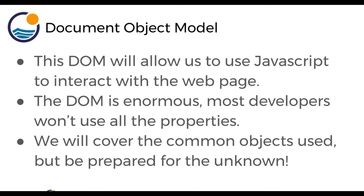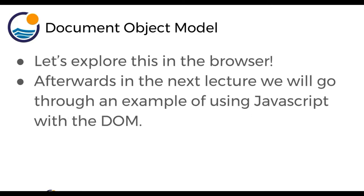This document object model will allow us to use JavaScript to actually interact with the web page and affect the HTML and CSS. Keep in mind, the document object model is enormous — it has tons of properties. But most developers won't use all the properties. We're going to be covering the most common ones. When you first see the DOM it's going to seem really intimidating, but you don't have to memorize all of them. You need an understanding of how it works so you can reference and find help on your own.